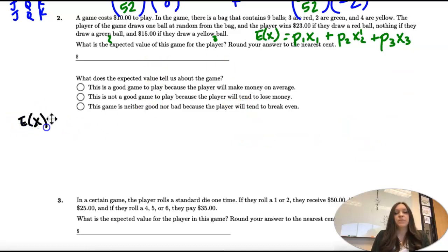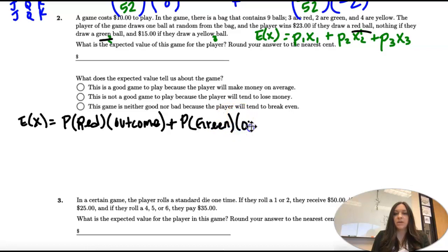Let's write them out. First, the probability of red times the outcome, plus the probability of green times the outcome, plus the probability of yellow times the outcome.